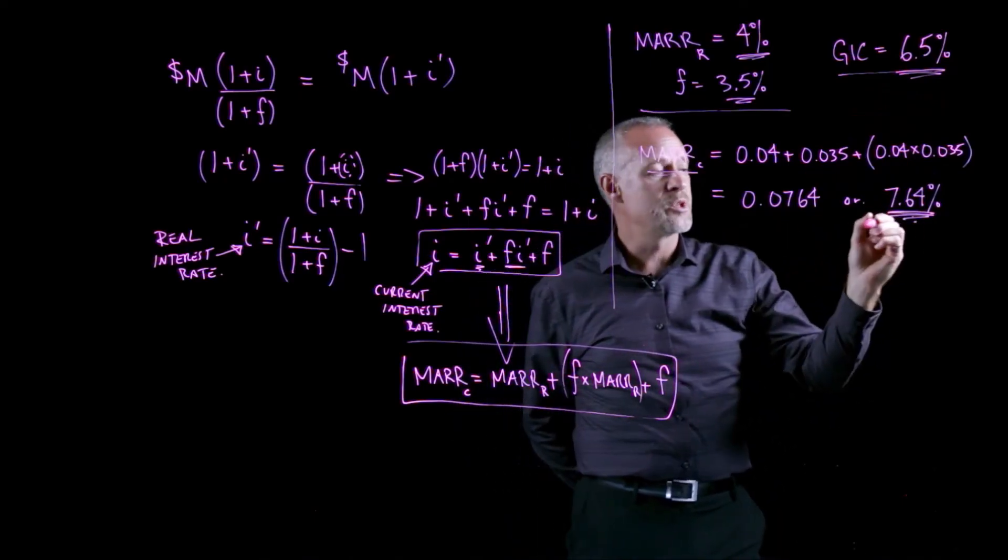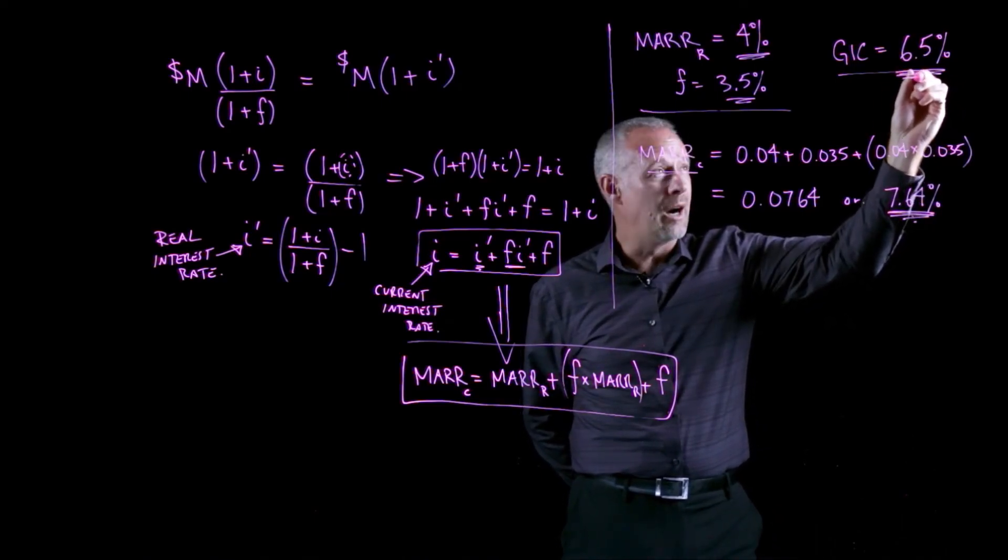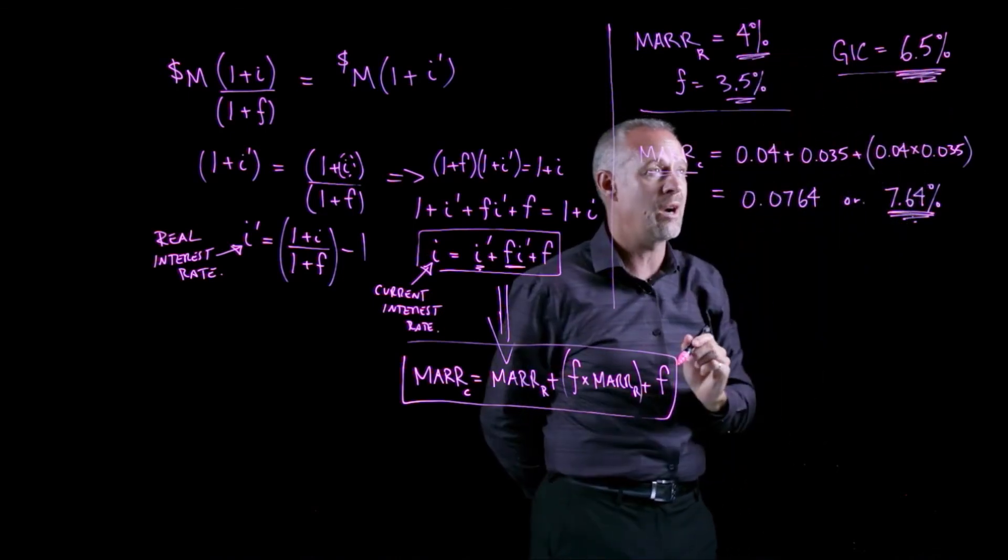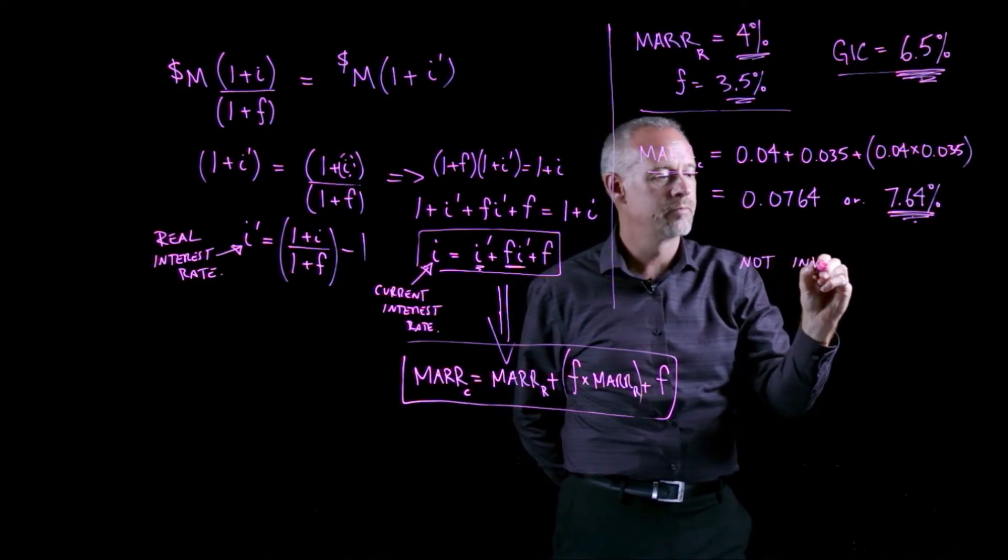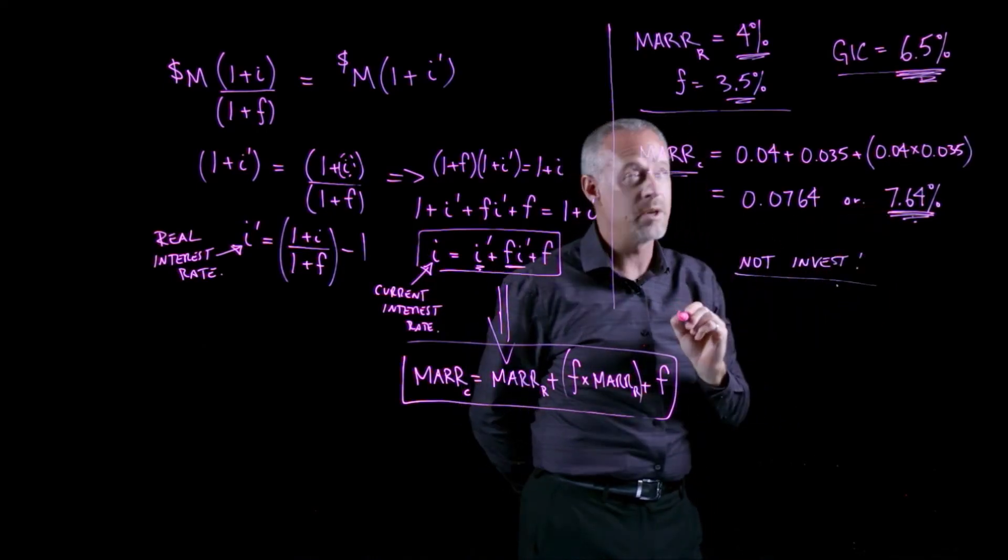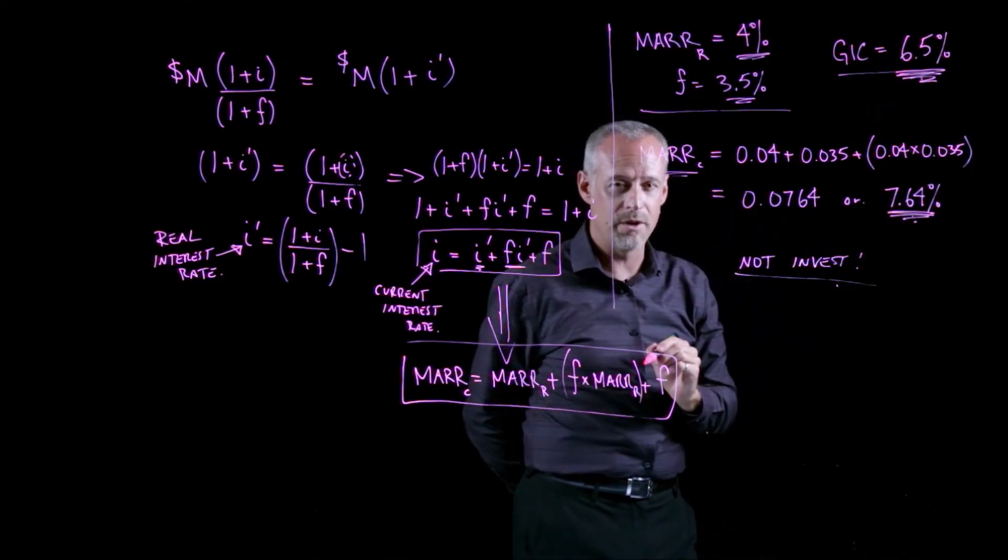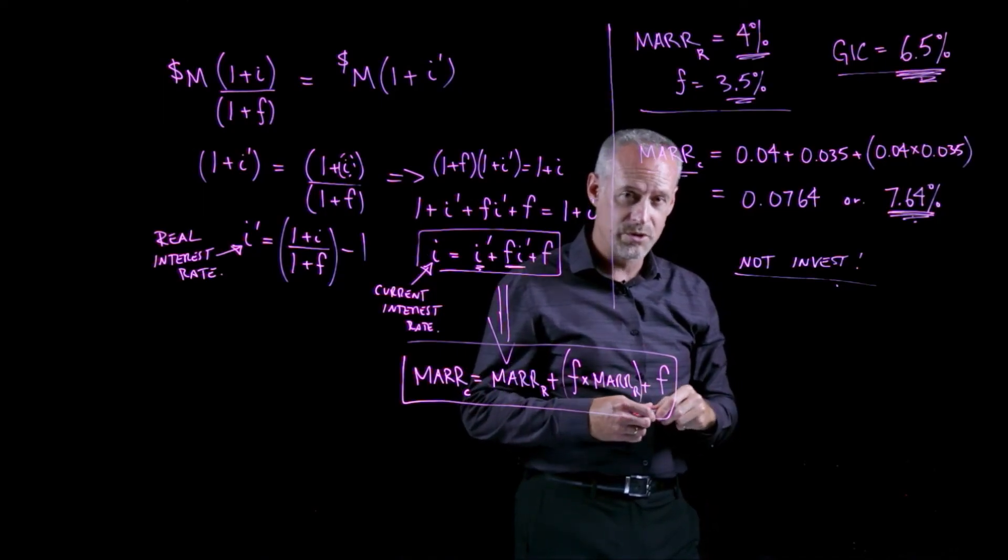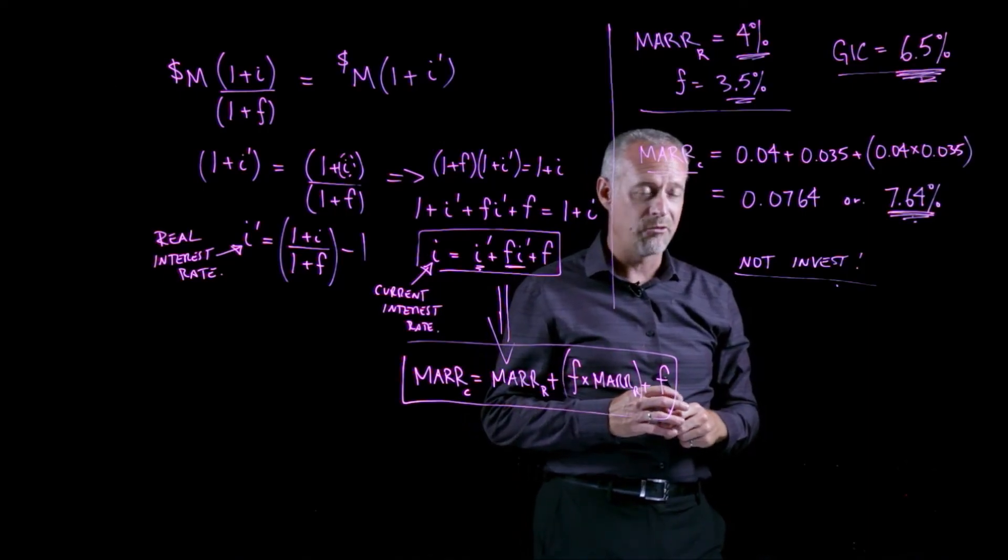This is higher than what the bank is currently advertising for this GIC. So, if you're this person, you would say, that's not enough to be attractive to me. I know that if I want to earn a real MARR of 4%, then I know inflation is 3.5%, then I would not invest because this number is less than the value of my current MARR. So, in this example, we illustrate how to incorporate inflation into the decision-making for investments.